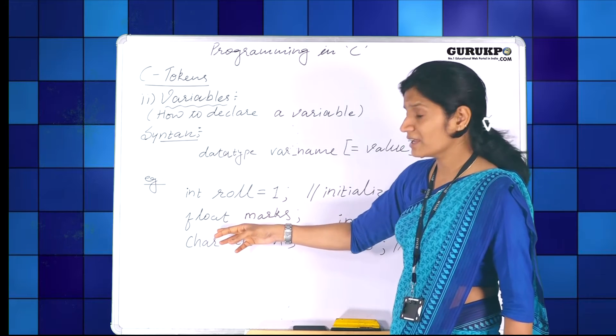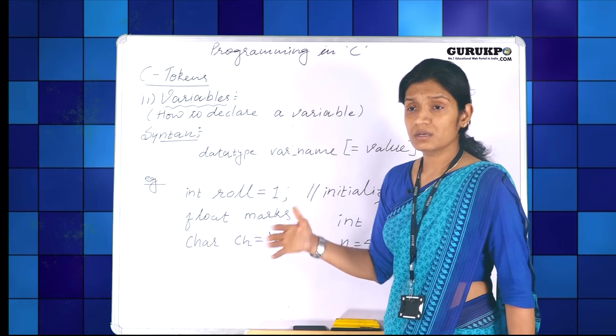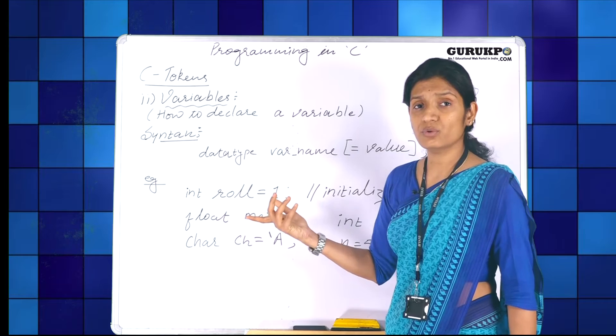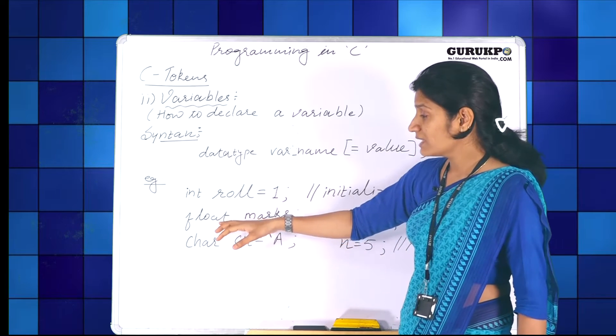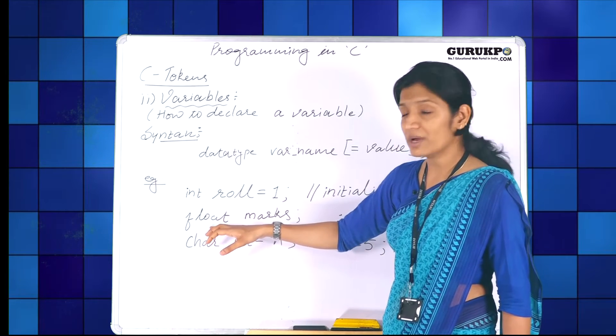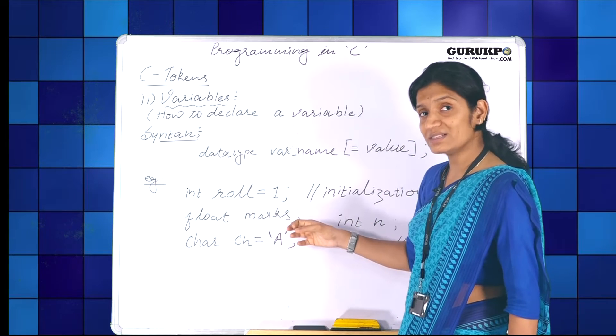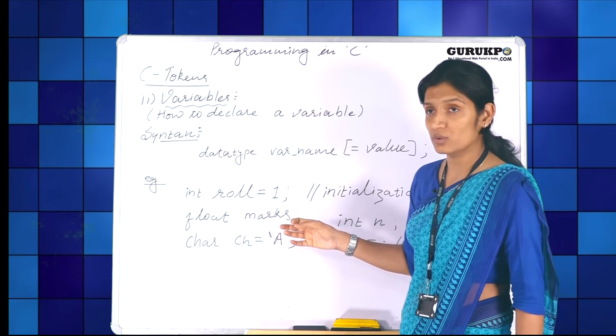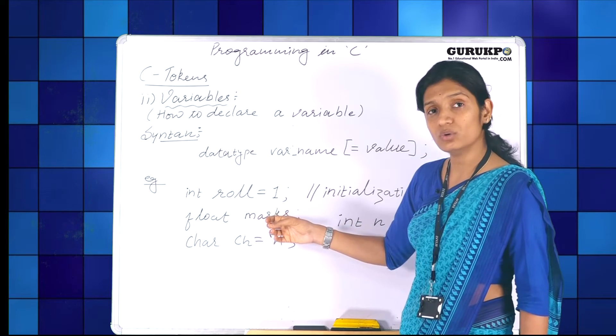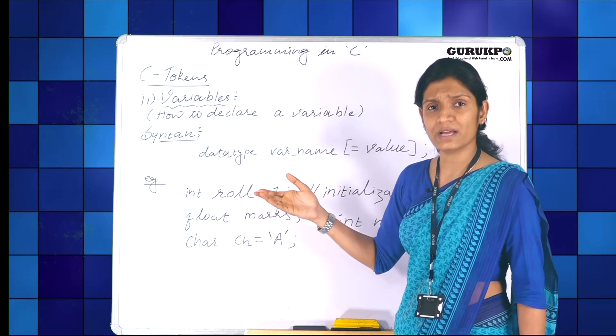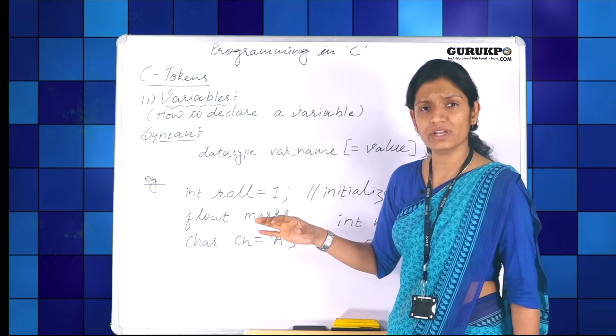Next example, I have taken as float. If we are taking some data as floating variable, full floating type, then we need to write the data type as float, then the name of the variable. In this case, I have omitted the initial value. I have not given any initial value to marks. Later on, I can assign it or I can take it from the user as well.